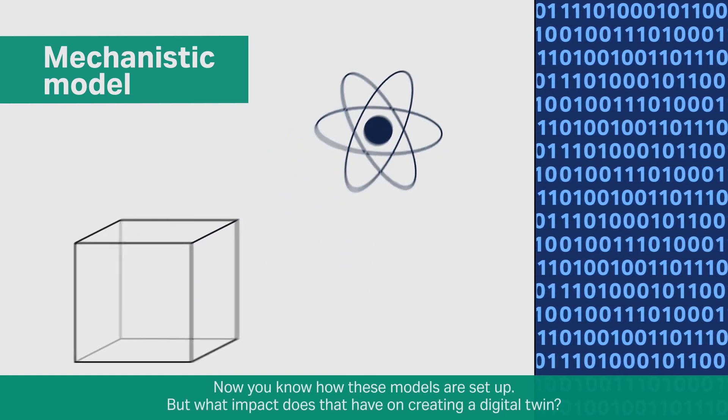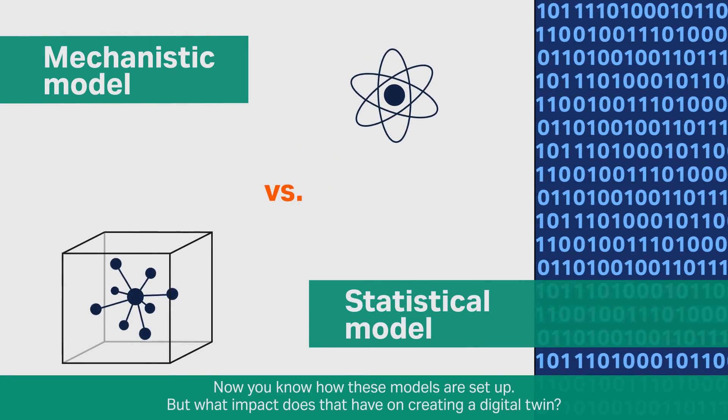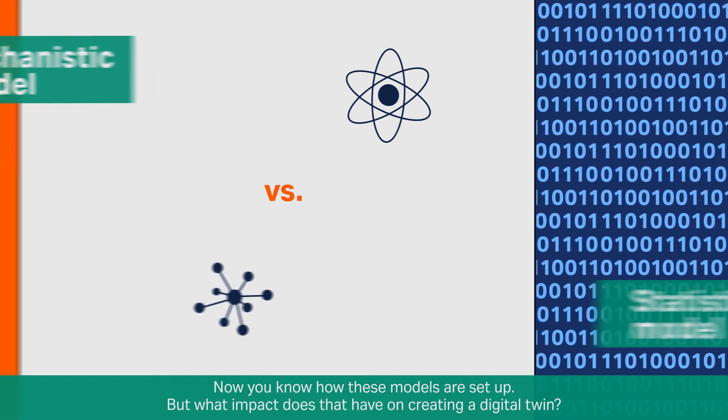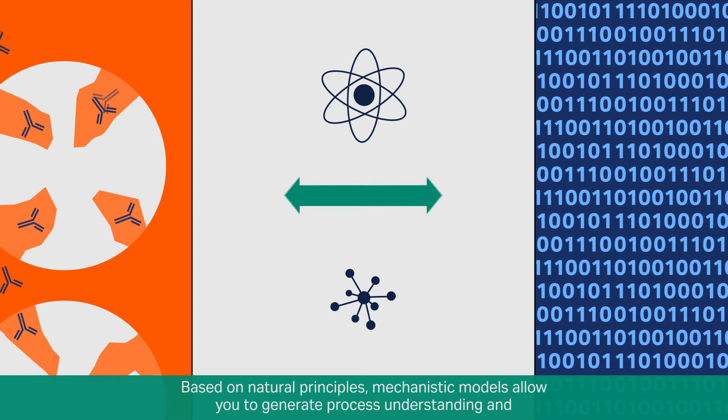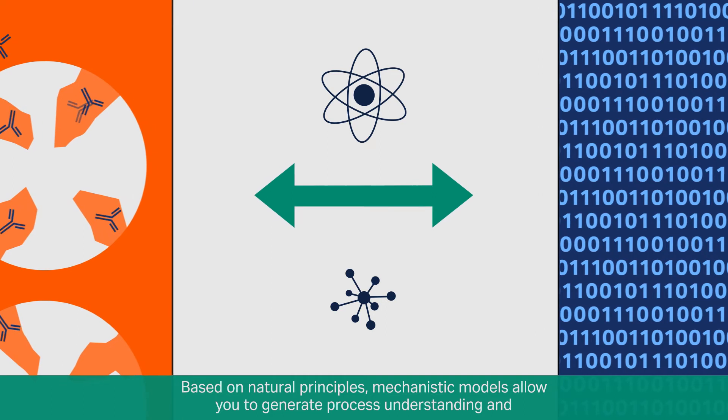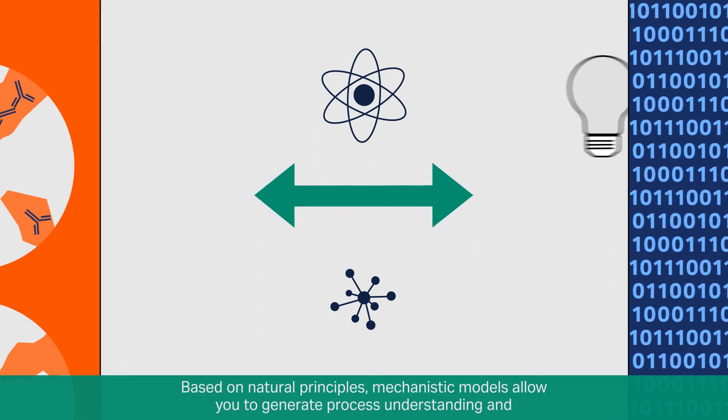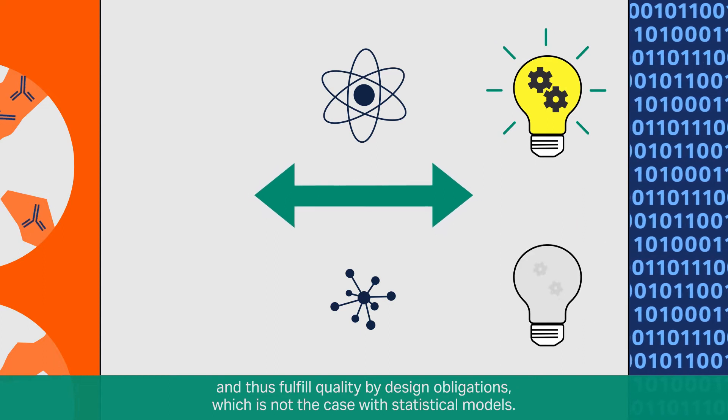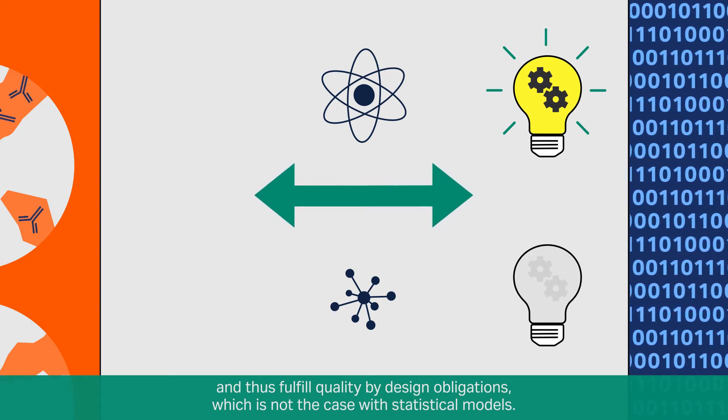Now you know how these models are set up. But what impact does that have on creating a digital twin? Based on natural principles, mechanistic models allow you to generate process understanding and thus fulfill quality by design obligations, which is not the case with statistical models.